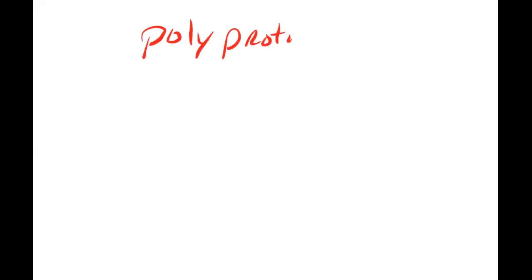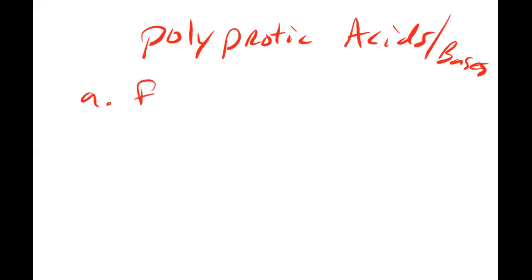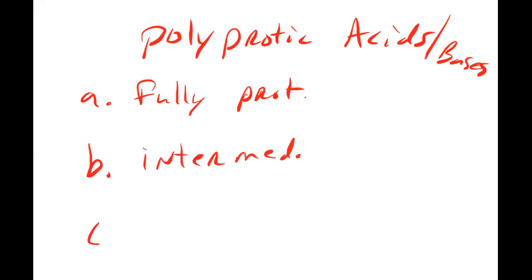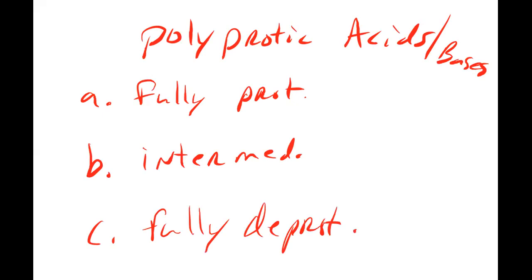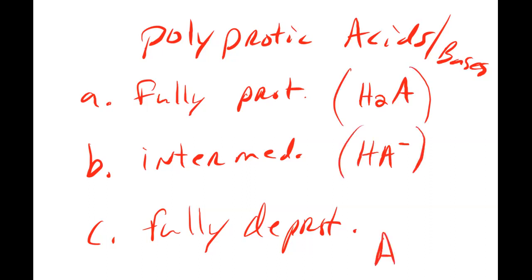So last time at the end of class we touched on this idea of polyprotic acids and bases. We're going to pick up with this concept today. The first three videos are going to teach you how to deal with the fully protonated form, then the intermediate form, and finally the fully deprotonated form. In the case of H2A, a diprotic acid, the fully protonated form is H2A, the intermediate is HA⁻, and the fully deprotonated is A²⁻.